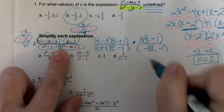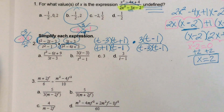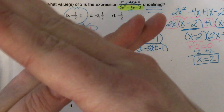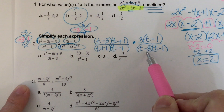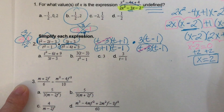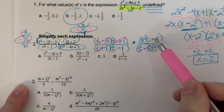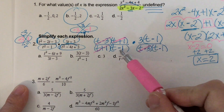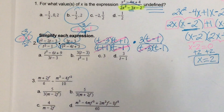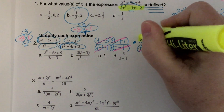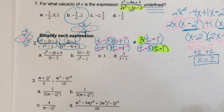Now the fun begins: I look for like factors to cancel on diagonals and vertically. I see (t minus 3) on top cancels with (t minus 3) below, (t plus 1) on top cancels with (t plus 1) below, and (t minus 1) on top cancels with (t minus 1) below. All that's left in the numerator is three and in the denominator is (t minus 1), making my answer D.